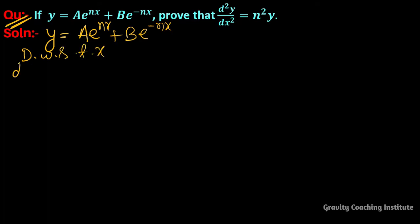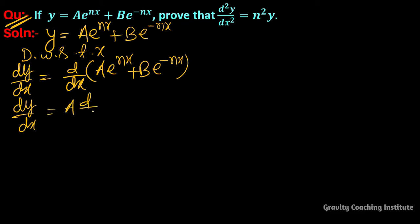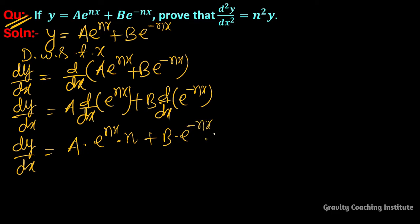So dy/dx equals differentiation of a into e to the power nx plus b into e to the power minus nx. So dy/dx equals a into differentiation of e to the power nx plus b into differentiation of e to the power minus nx. So dy/dx equals a into e to the power nx into n plus b into e to the power minus nx into minus n.